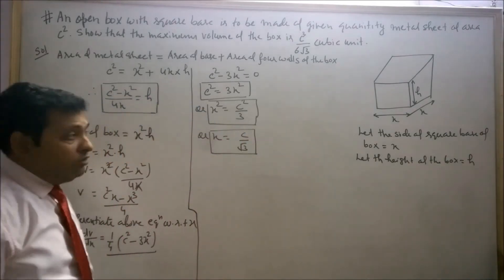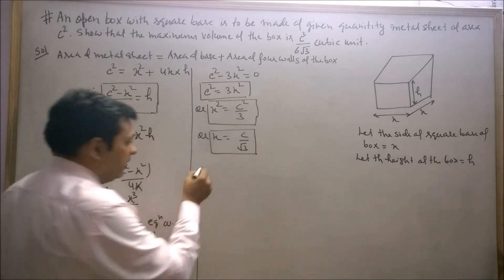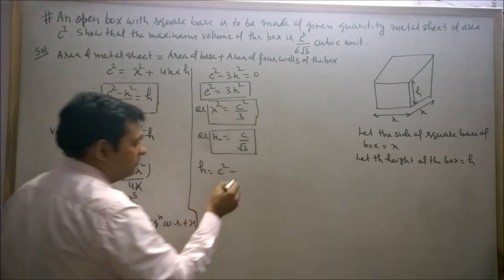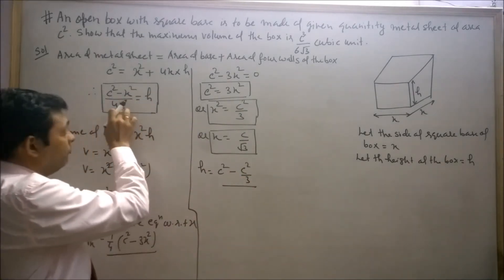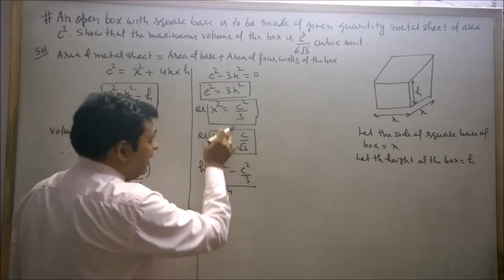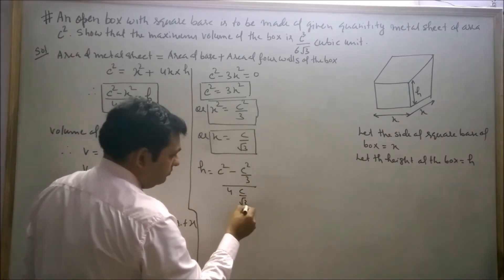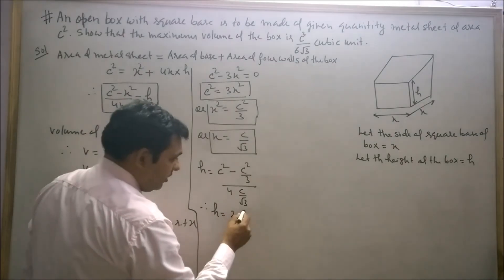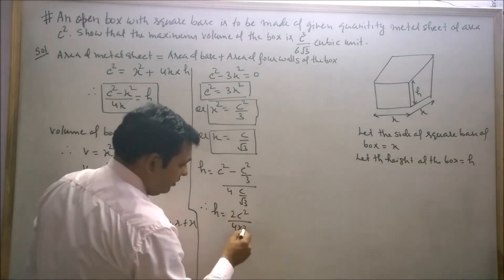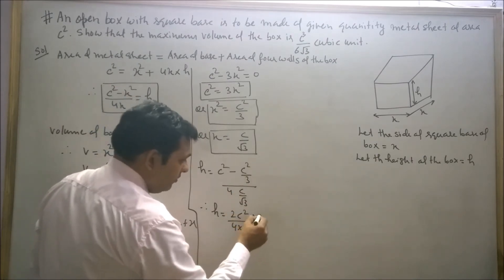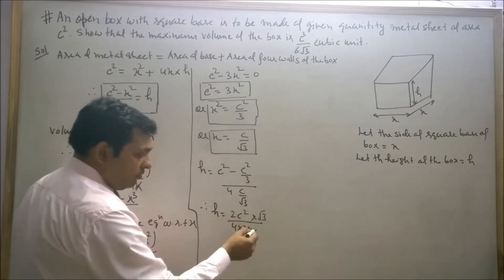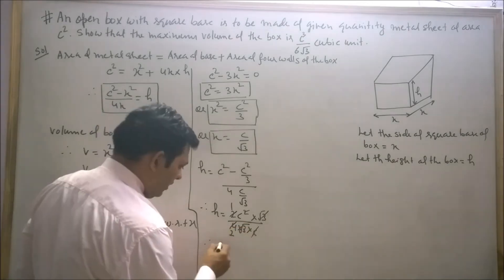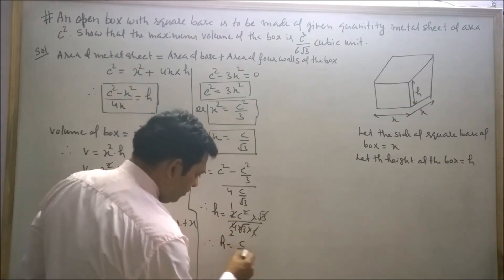Now find the value of h at this critical point. h equals (C squared minus x squared) upon 4x. Substituting x squared equals C squared upon 3, the numerator becomes C squared minus C squared upon 3 equals 2C squared upon 3. The denominator is 4 into C upon root 3. Simplifying, h equals C upon 2 root 3.